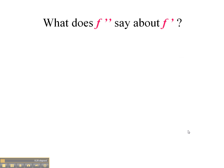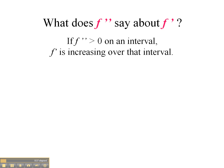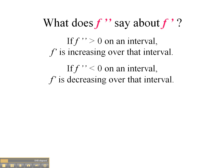The question we want to answer is: what does f double prime say about f prime, and then consequently what does it say about the original function? Well, if f double prime is positive over an interval, then we know that the first derivative is increasing over that interval, because that's what a derivative tells us about its original function. If f double prime is negative on an interval, the first derivative will be decreasing over that interval.